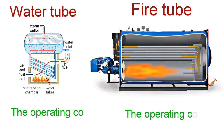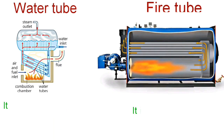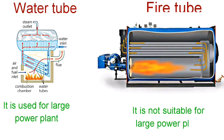The operating cost of a water tube boiler is high, whereas the operating cost of a fire tube boiler is less. The water tube boiler is used for large power plants, whereas the fire tube boiler is not suitable for large power plants.